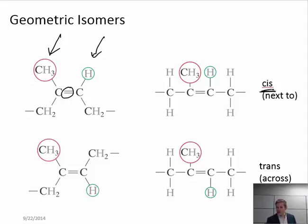whereby the propyl group is next to the hydrogen group, or we could have the trans arrangement, whereby the propyl group is diagonally across that repeat unit from the hydrogen group.